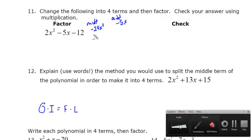You listed all those numbers that multiplied to give you negative 24. So if you look back at number 10, go ahead and find the two numbers that multiply to be negative 24 but also add up to be negative 5X.